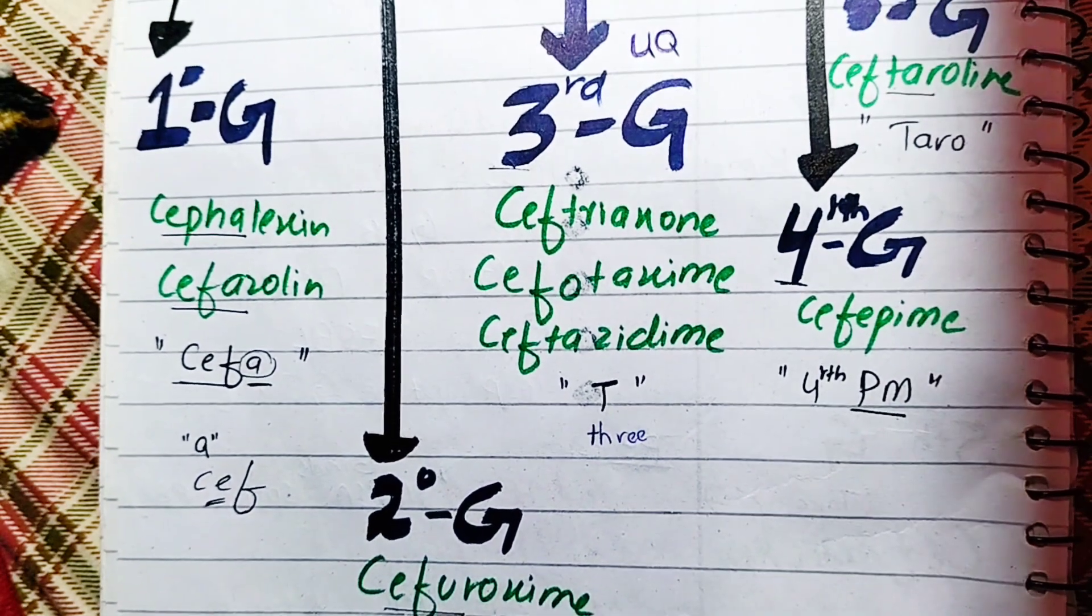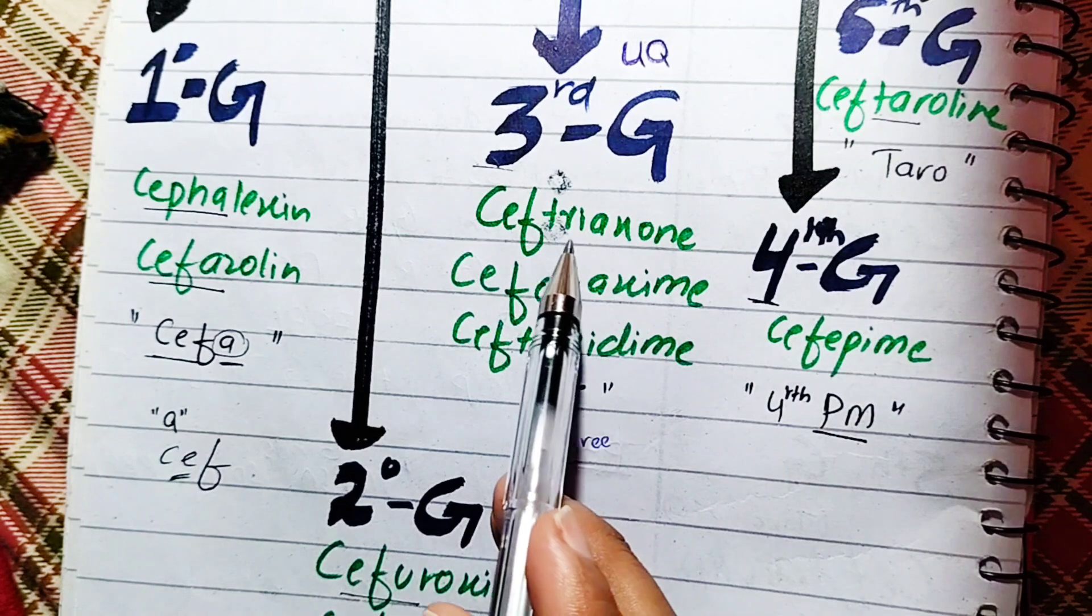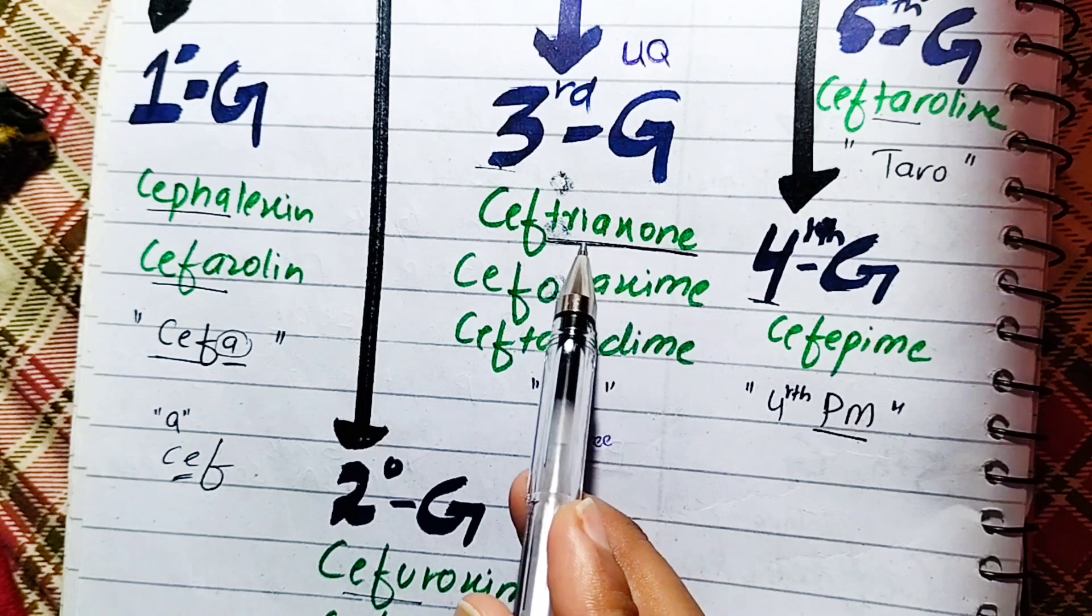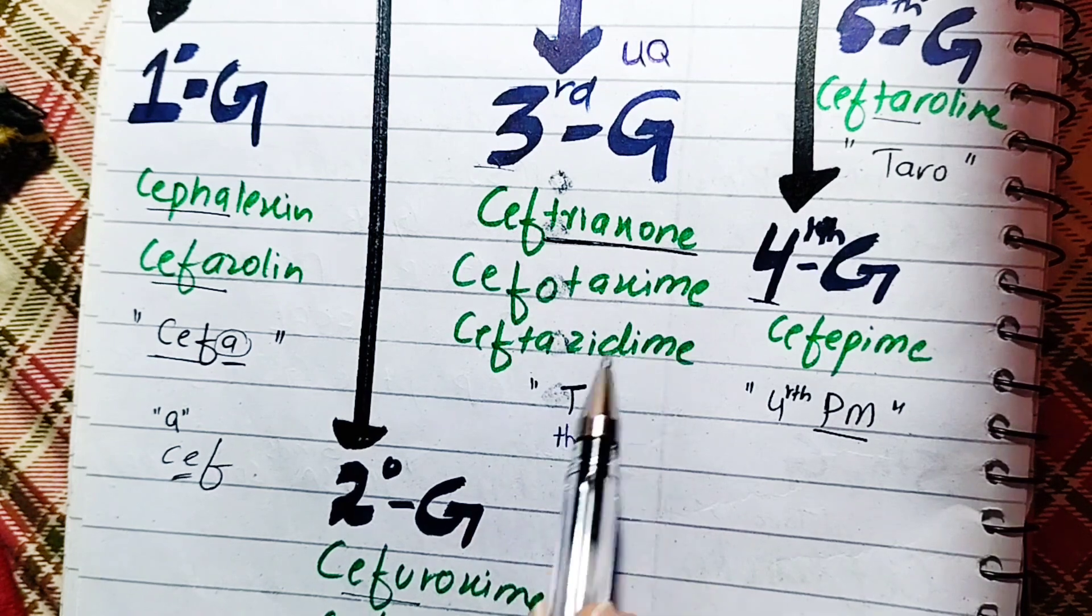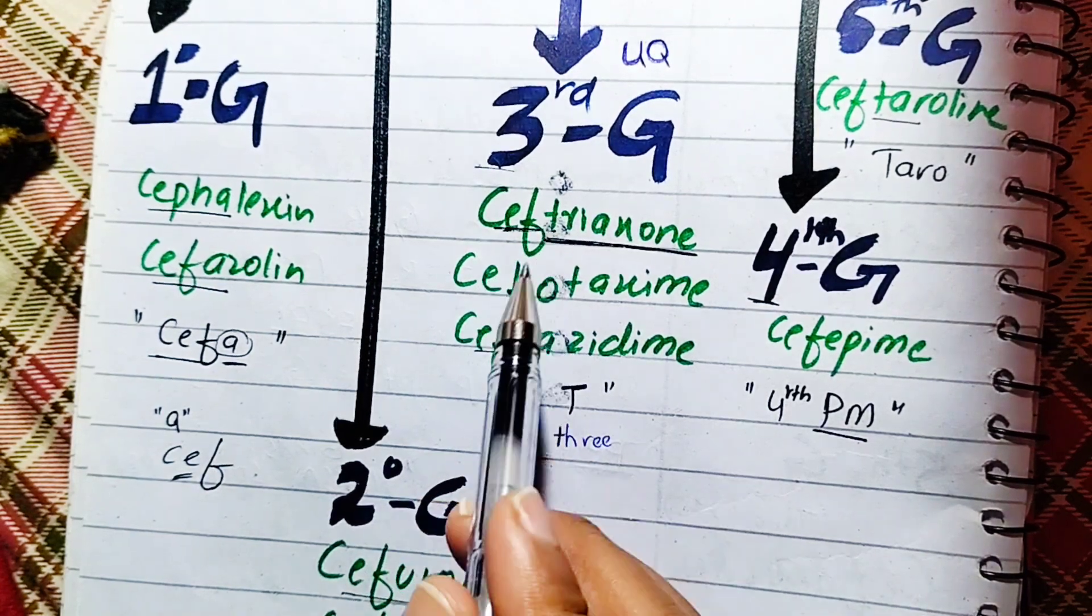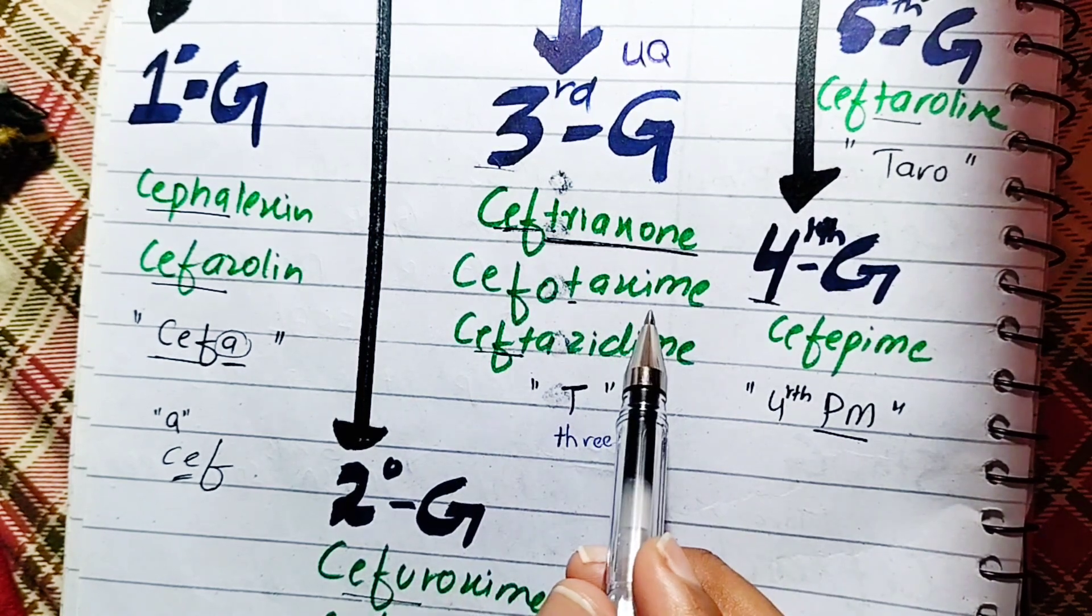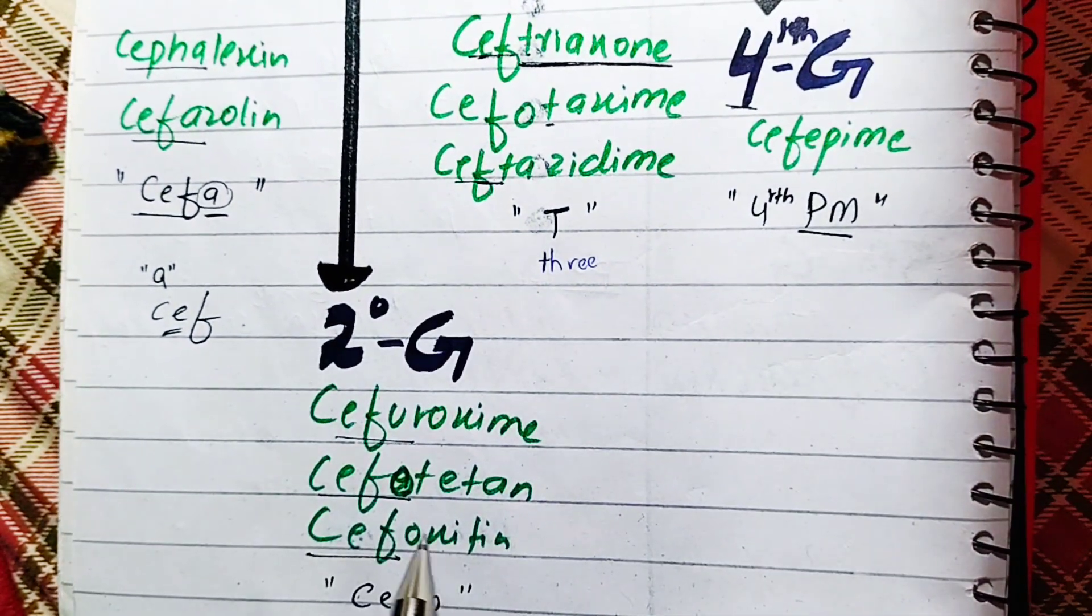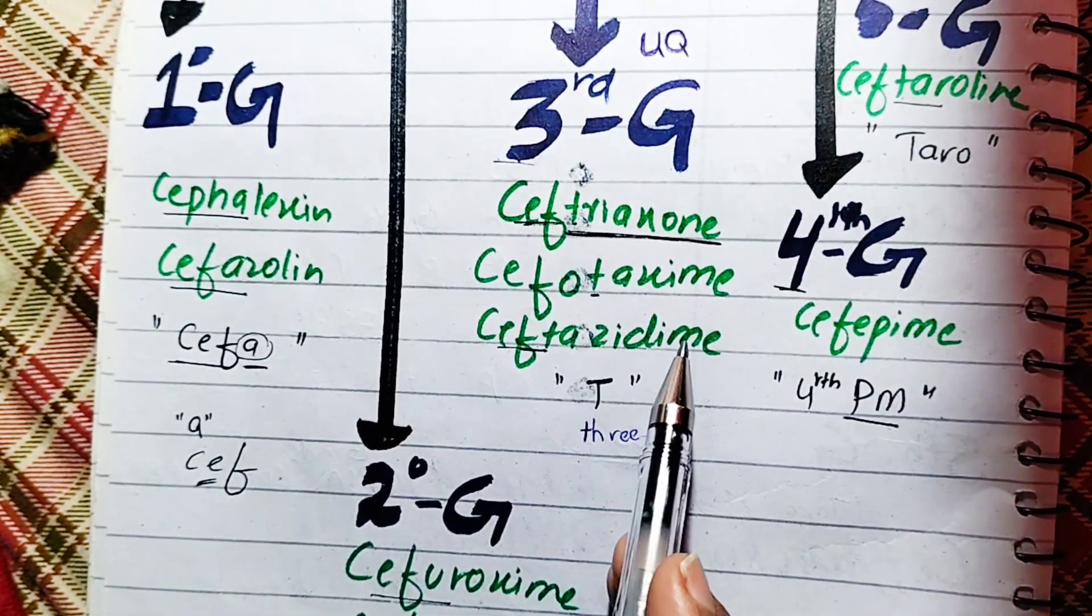Then we will talk about the third generation. In the third generation, you will come to the tribe. It means T. So, we will talk about the CFT. This is the CFT. Then we will talk about Ceftriaxone, Ceftazidime. The CFT and CFT are very different. And the CFT are a little mixed.